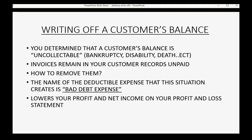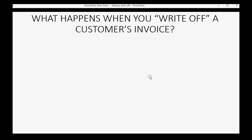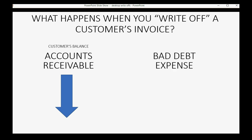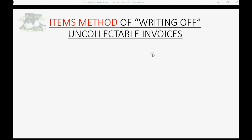The bad debt expense lowers your profit and lowers your net income on your profit and loss statement. So what happens when you write off a customer's invoice? Accounts receivable, where that customer's balance is staying, goes down because you just wrote off invoices and lowered a customer's balance. But on the other hand, bad debt expense goes up because that expense account represents all the money you lost for invoices that you needed to write off.